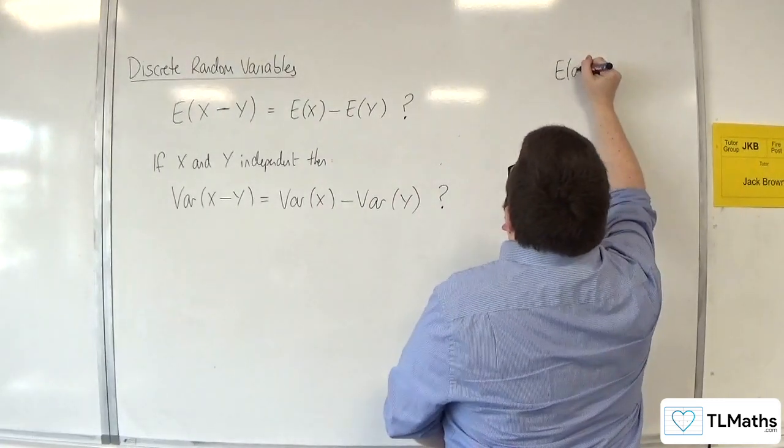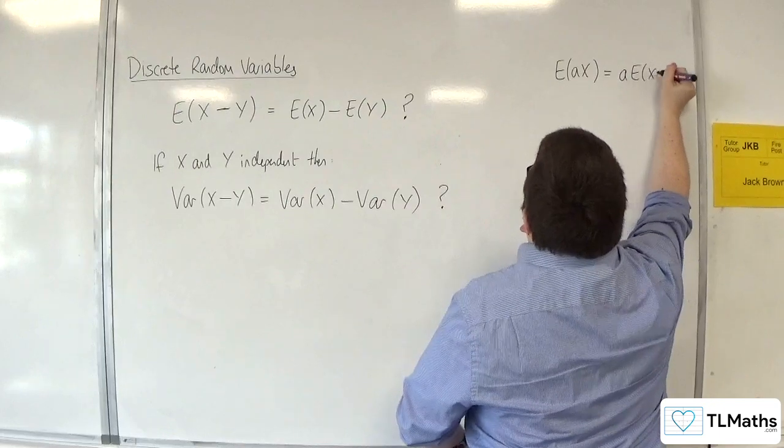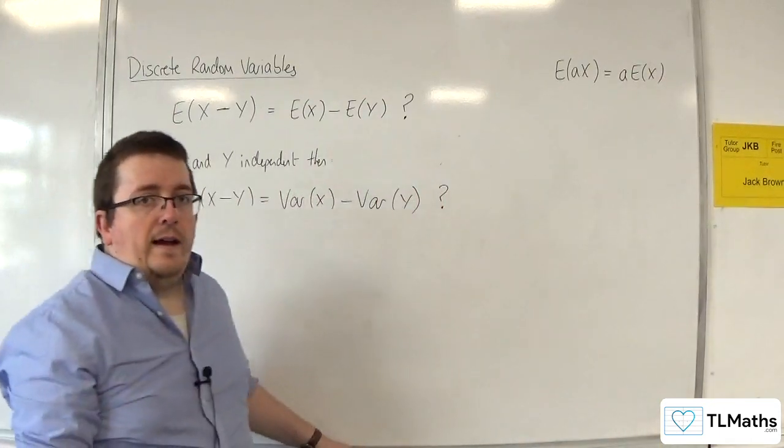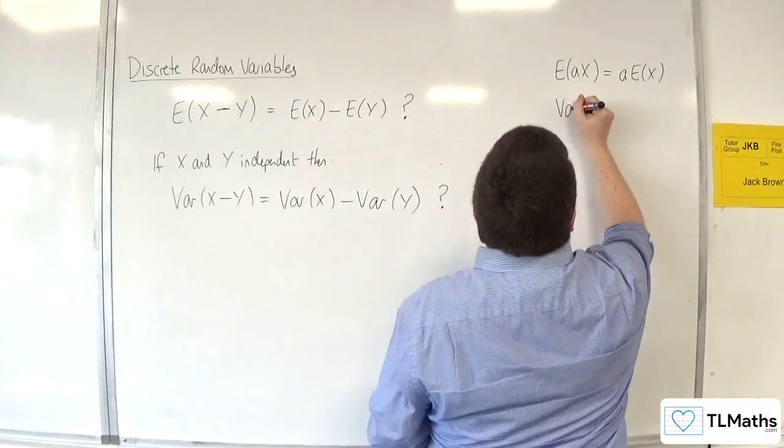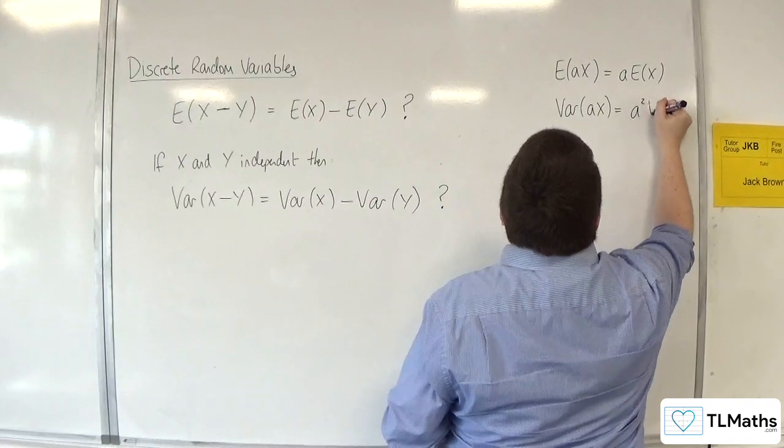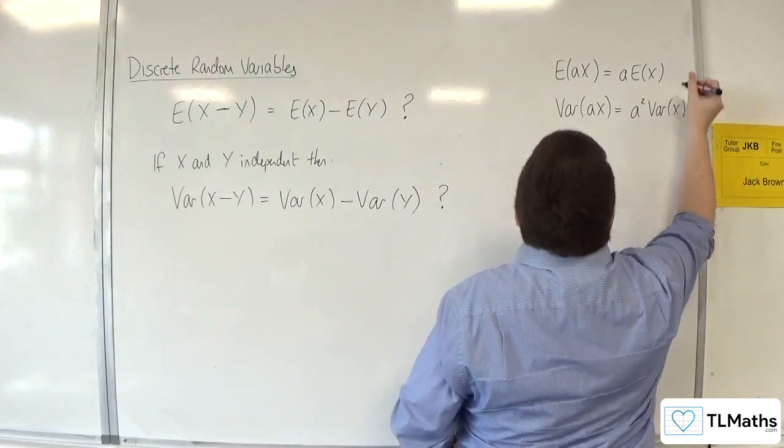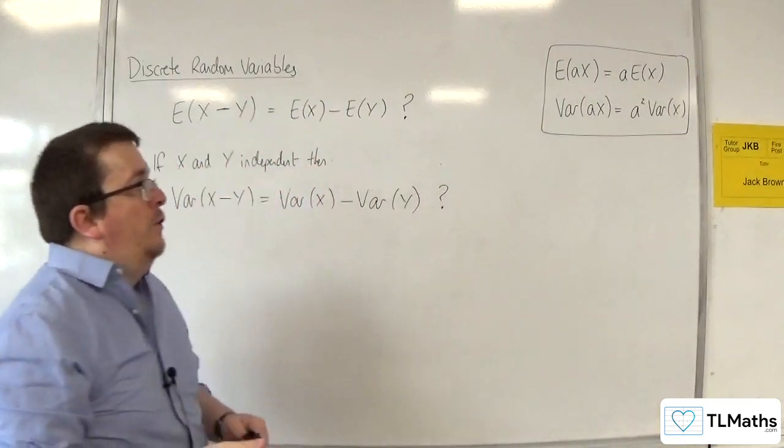We already know that E of aX is equal to a times E of X. Okay, we've seen that. We've proved that. We've also seen that Var of aX is equal to a squared Var of X. So we have those two already.